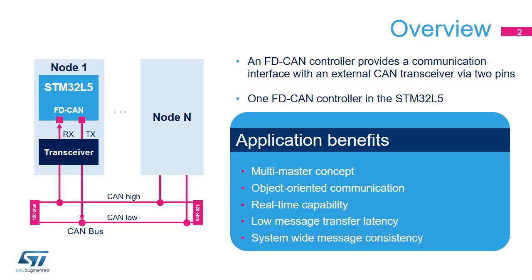The Flexible Data Rate Controller Area Network is a standard serial differential bus broadcast interface that enables the microcontroller to communicate with external devices connected to the same network bus. The FDCAN interface is highly configurable, enabling nodes to easily connect using just two wires. Applications benefit from a multi-master concept with message priority, object-oriented communication (no-node addressing but content identification), real-time capability with low message transfer latency and system-wide message consistency, i.e. error detection and management mechanism. The STM32L5 microcontroller embeds one FDCAN controller.